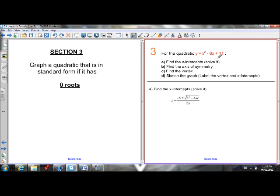So graph y equals x squared minus 6x plus 11. Let's just go ahead and verify that this has no roots. So my a value is 1, my b value is negative 6, and my c value is 11.